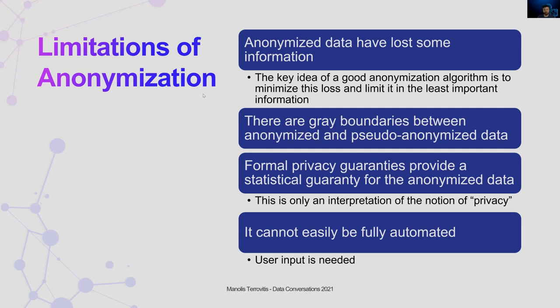A way to reverse anonymization is through secondary information, for example your date of birth and your zip code. So you may remove the name — if you have a catalog with names, zip codes, and dates of birth and you remove the names, you have pseudonymized data. To get the data really anonymized, you have to reduce the accuracy on the date of birth and zip code so they will no longer be unique. When we anonymize the data, the original data are transformed and some accuracy has been lost.